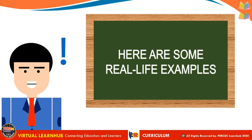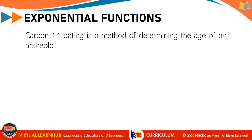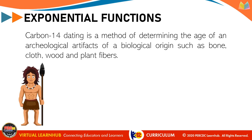Let's provide some real-life examples. One major example of Exponential Function is carbon dating, or more specifically, carbon-14 dating. Carbon-14 dating is a method of determining the age of archaeological artifacts of a biological origin such as bone, cloth, wood, and plant fibers. While a person or any organism is alive, the amount of carbon-14 and carbon-12 in its body is always proportional — let's say M over K, where M is the amount of carbon-14 and K is the amount of carbon-12.